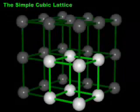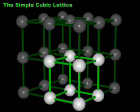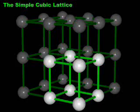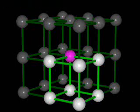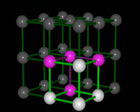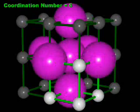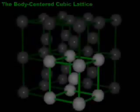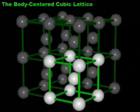The term coordination number refers to the number of atoms touched by a given atom inside a lattice structure. We will consider the coordination number of the simple cubic lattice first. We have already seen that in the simple cubic lattice, the atoms touch along an edge of the cell. In a single unit cell, one vertex atom touches three other atoms along three edges of the cell. To see the remaining atoms, we must look outside a single cell. The same atom also touches three other atoms along the edges of three other cells, for a coordination number of six.